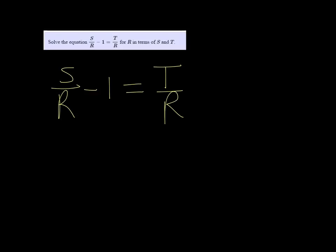So for solving for r, we need to get it out of the denominator, and to do that, we're going to multiply both sides by r.